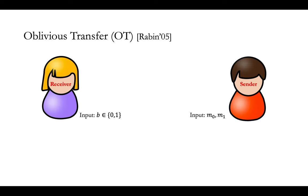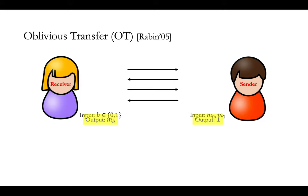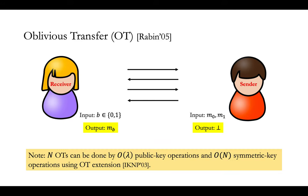A key primitive that we will use is Oblivious Transfer, or OT for short, which is again a special secure two-party computation protocol between two parties. We call them sender and receiver, where the sender has two arbitrary messages M0 and M1 as input, and the receiver has a single bit B as input. From the secure two-party computation protocol, the receiver will learn one of the two messages depending on her choice bit B, and the other message is hidden to her, while the sender learns nothing about the receiver's choice bit. This primitive Oblivious Transfer requires public key operations, so it is computationally expensive. But if we are doing a large number of OTs, then they can actually be done by a small number of public key operations — order lambda of them, where lambda is a security parameter — and all the remaining operations are symmetric key, using OT extension, so the overall computation is still very efficient.